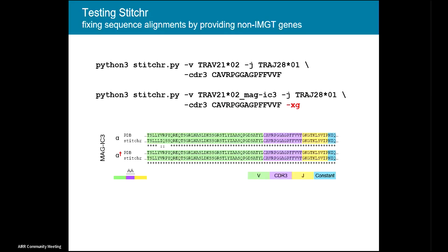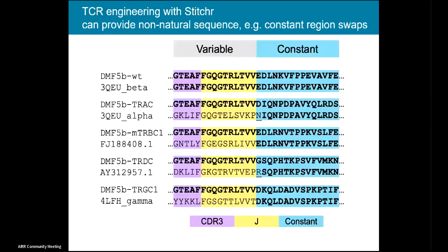This speaks to the potential for rational TCR engineering. Another common engineering application is swapping constant domains so that you can put TCRs in a cell that already has its own TCR. For example, putting the DMF5 beta TCR variable domain upstream of different constant domains — human beta, mouse beta, human delta, gamma — whatever constant you like. It's very easily achieved just by swapping one field in the command. When we synthesized and cloned these TCRs into Jurkat reporter cells, we see that we recapitulate the expected specificities — activation only occurs when co-incubated with cells of the appropriate HLA type pulsed with the cognate peptide.